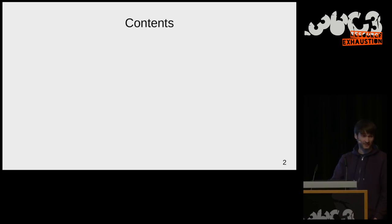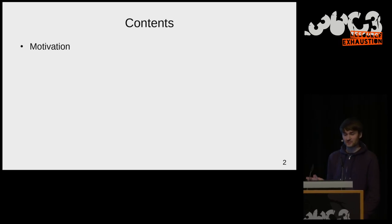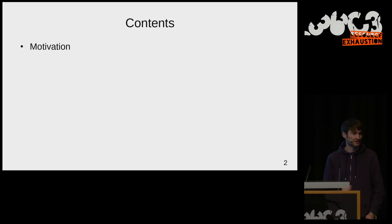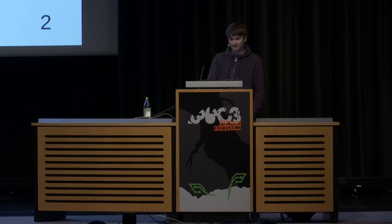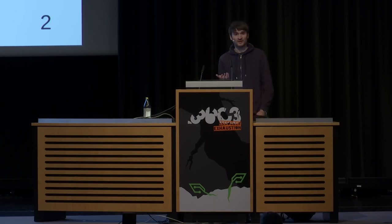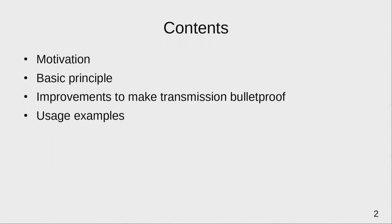Starting with motivation — the obvious question is why would you need to change something with Wi-Fi devices when they work well? They work well for intended applications, but there's a class of applications where the Wi-Fi standard fails. Then I'll cover the basic principle, improvements to make broadcast transmission bulletproof, usage examples, and real video footage transmitted using this scheme.